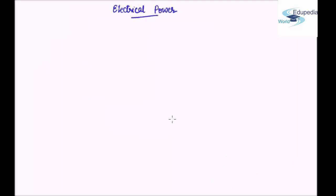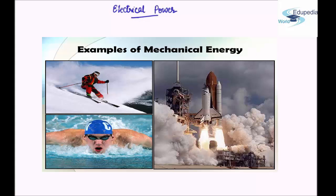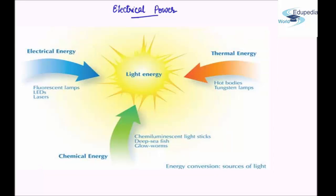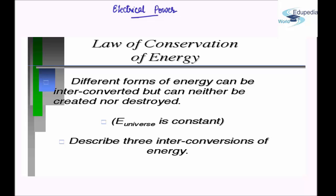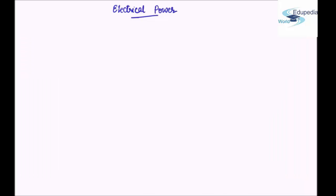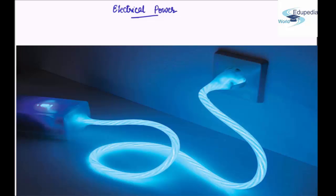There exist many different forms of energy like kinetic energy, potential energy, mechanical energy (which is the combination of kinetic and potential energy), light energy, sound energy, electrical energy, and many more. Electrical energy is one of the many forms of energy. By the law of conservation of energy, energy can neither be created nor destroyed, but it can be transformed from one form to another. This means electrical energy can be produced from other forms of energy, and electrical energy can also be transformed into other forms.